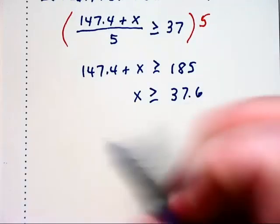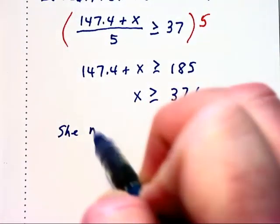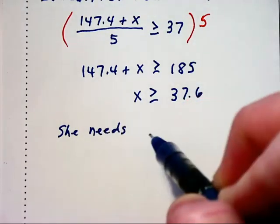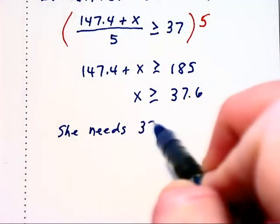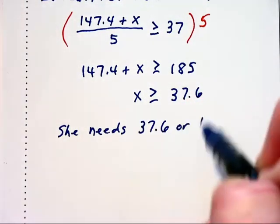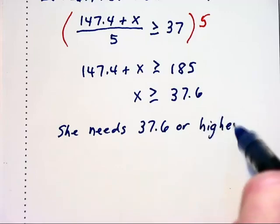So basically, this says that she needs 37.6 or higher at the next competition.